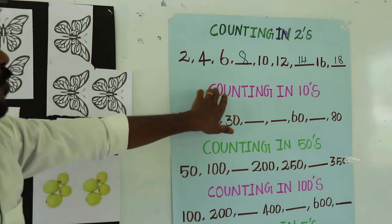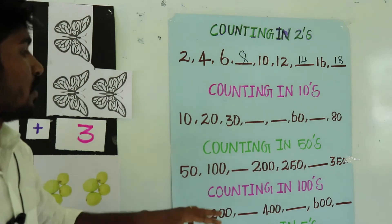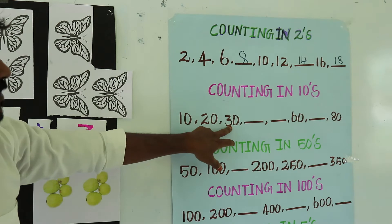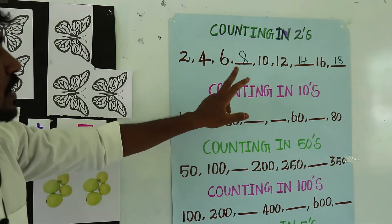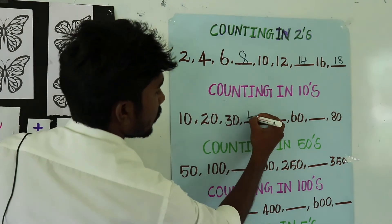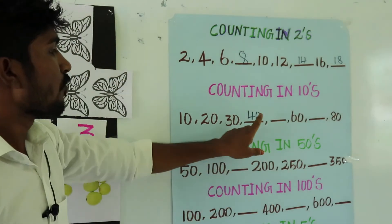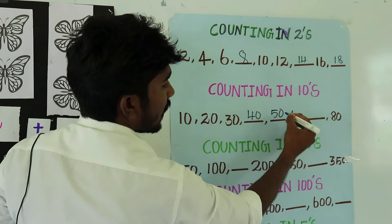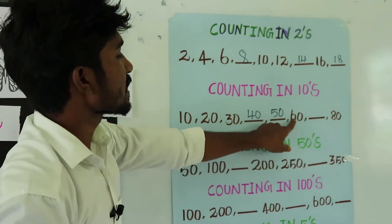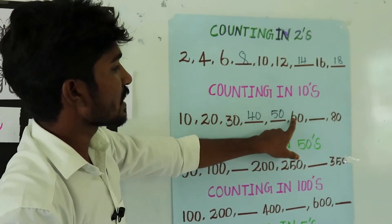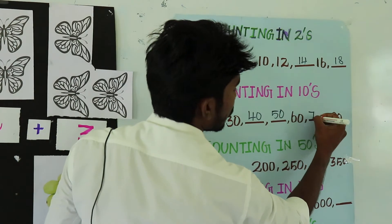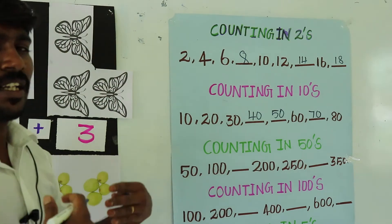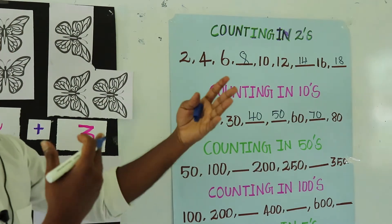Next one, counting in 10s. So 10 plus 10 is equal to 20, 20 plus 10 is equal to 30, 30 plus 10 is equal to 40, 40 plus 10 is equal to 50, 50 plus 10 is equal to 60, 60 plus 10 is equal to 70, 70 plus 10 is equal to 80, then 80 plus 10 is equal to 90, and so on.